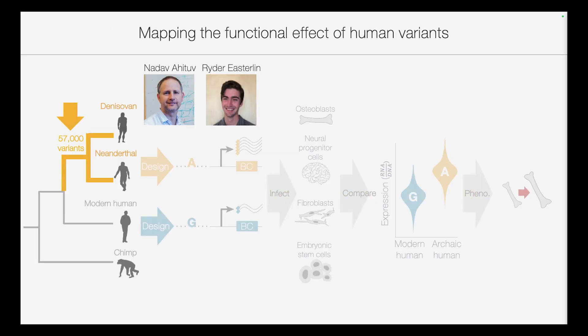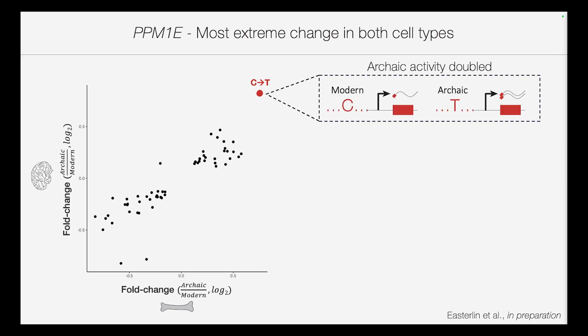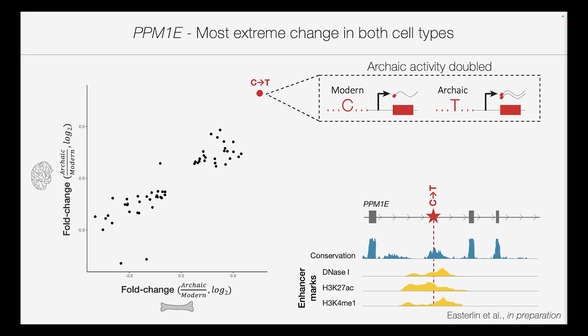Now let's talk about the 57,000 variants that emerged in archaic human evolution. Out of these variants, there was one that really caught our eye — a substitution from C to T that has the strongest effect in both bone cells and neuroprogenitor cells. In fact, this single nucleotide change doubles the expression of this regulatory element in Neanderthals and Denisovans. It is found within a gene called PPM1E. When we look at this region, it is extremely conserved across mammals, suggesting an important function, and it is enriched for enhancer marks, suggesting this region actually regulates the expression of PPM1E.